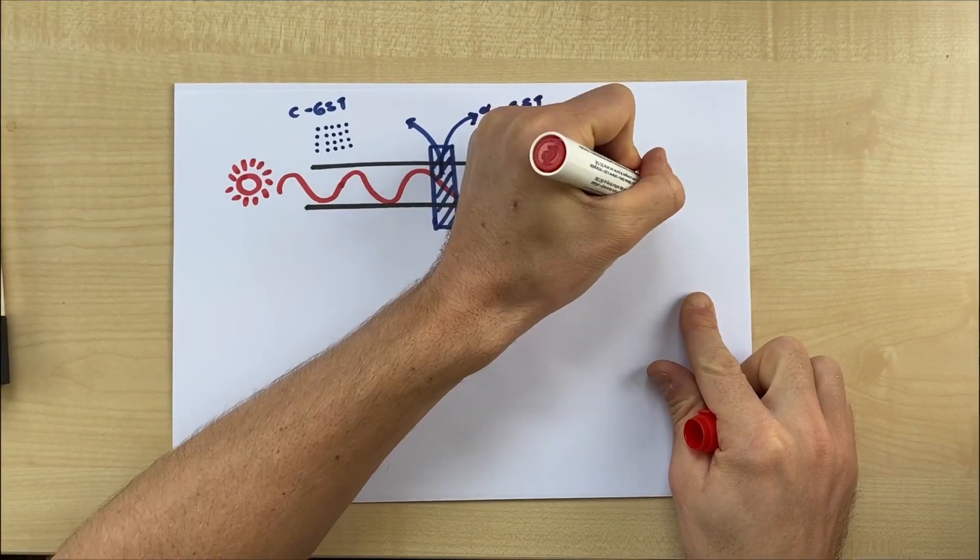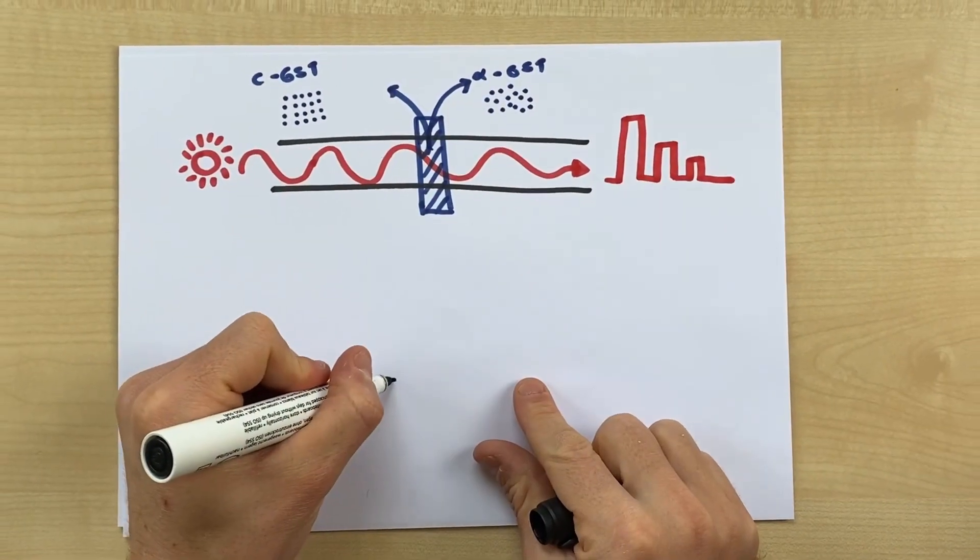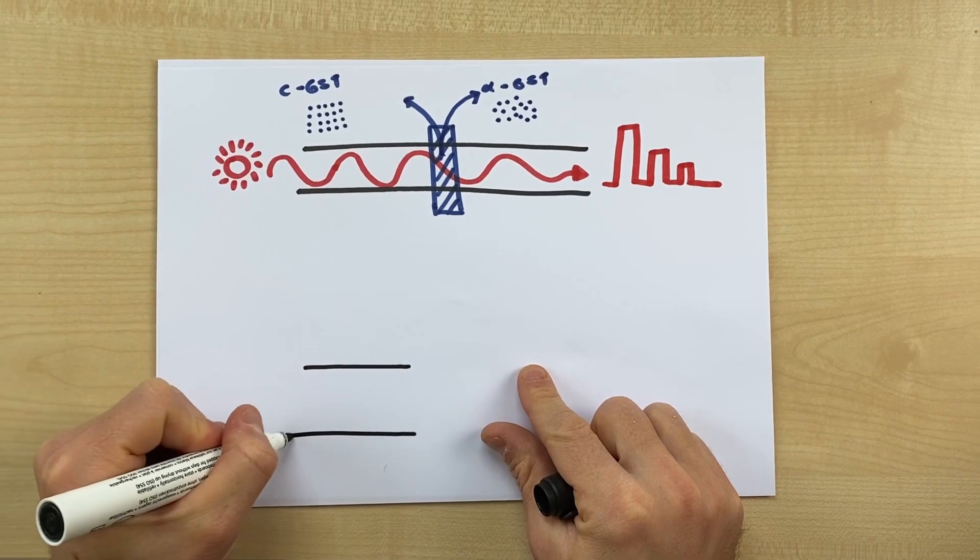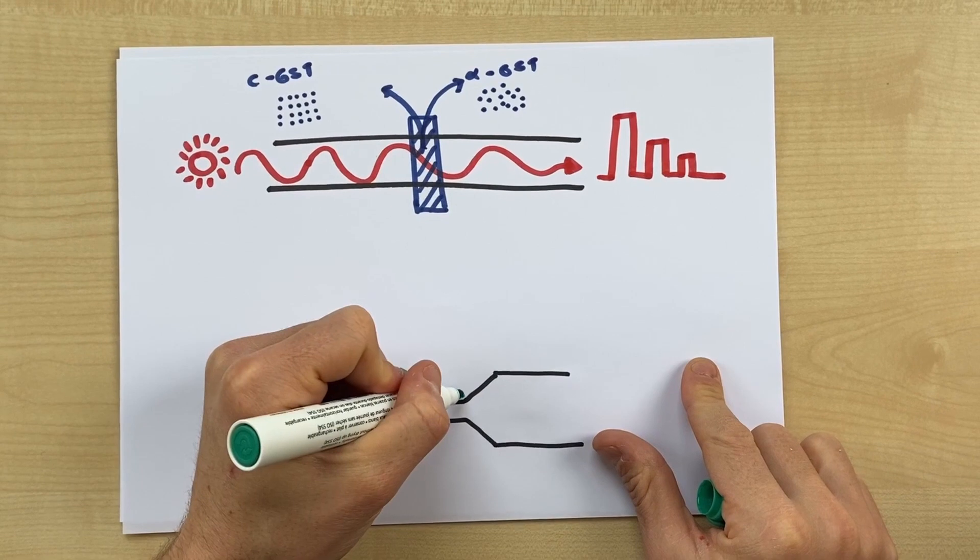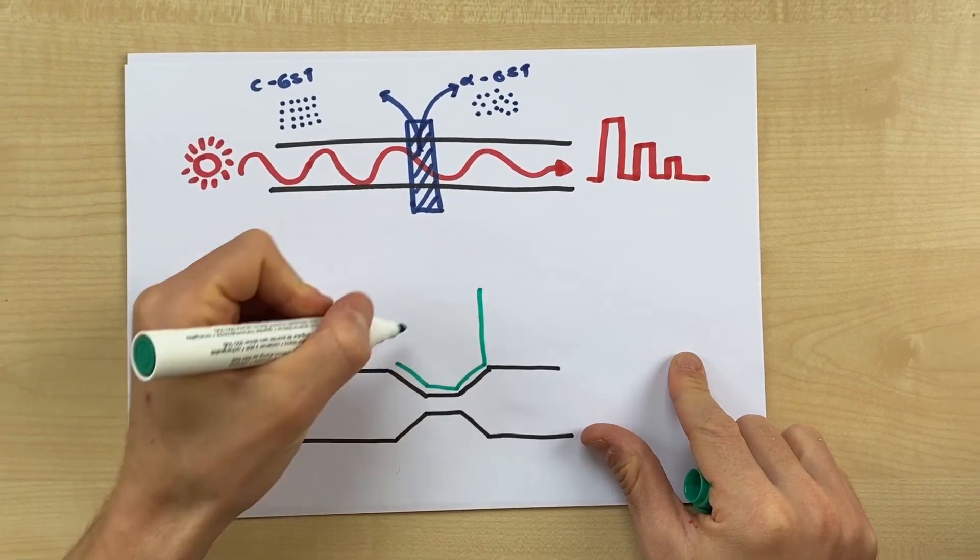This allows to modulate the output light and thereby store information in the state of the material. This architecture, however, makes it nearly impossible to measure the state of the material electrically due to the large dimensions of the phase-change element.